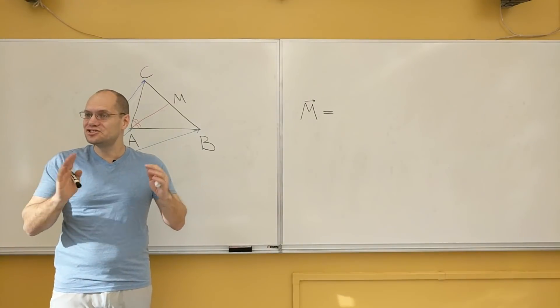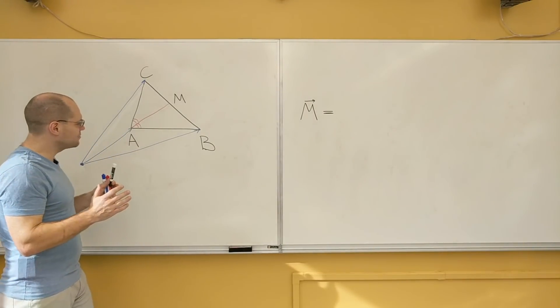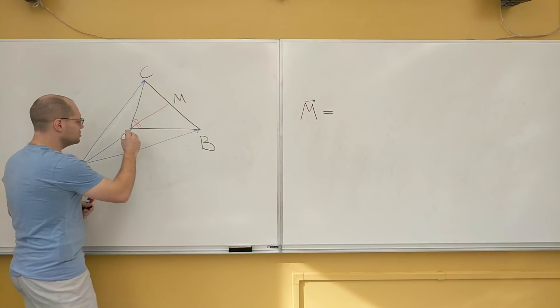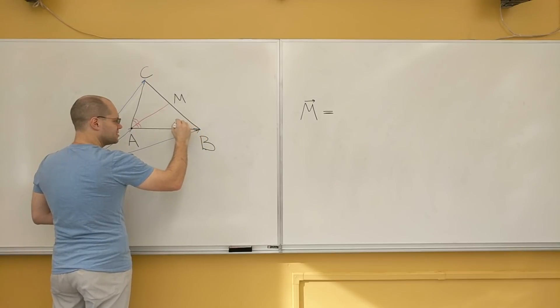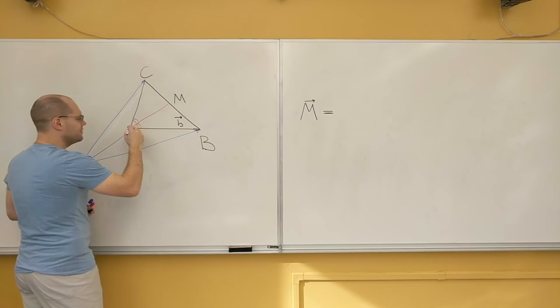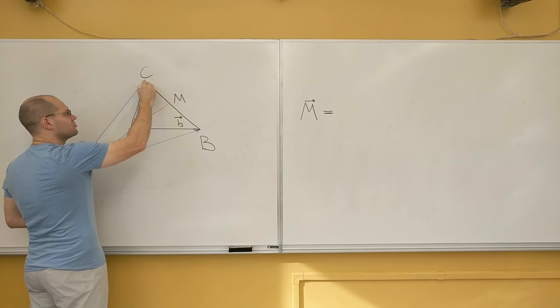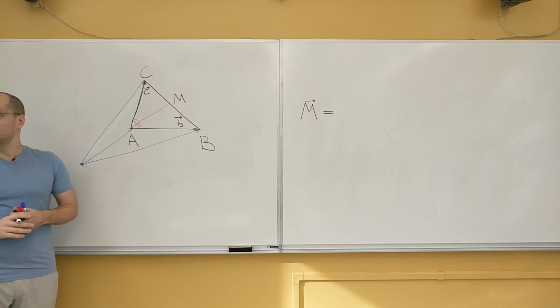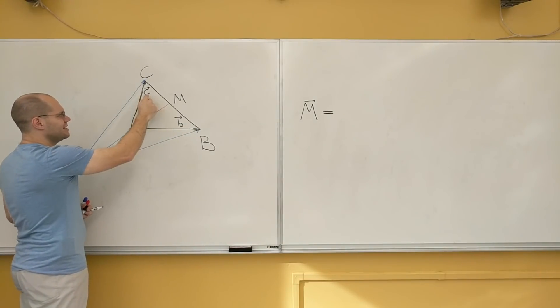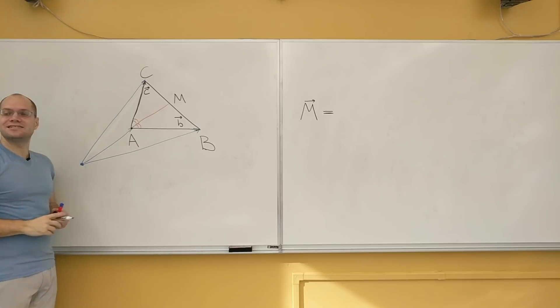I'll give you one little strategic hint. And that's just for convenience. Introduce these vectors that point from A to B. Call it little b vector. And the vector that points from A to C right here. Call it little c vector. Do it in terms of those. Clearly, little b is B minus A, and little c is C minus A.